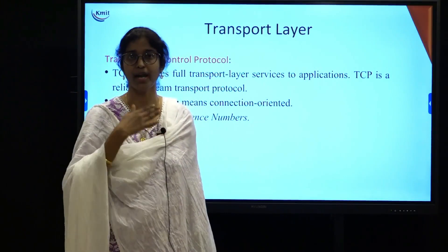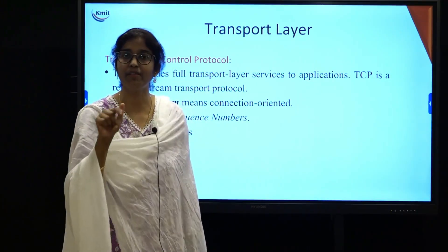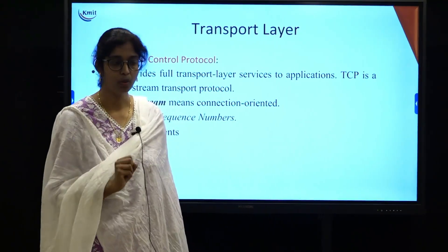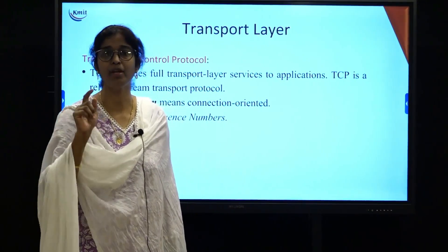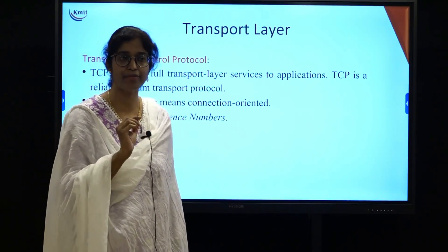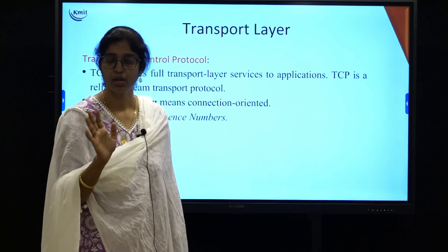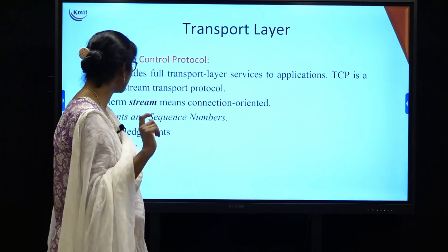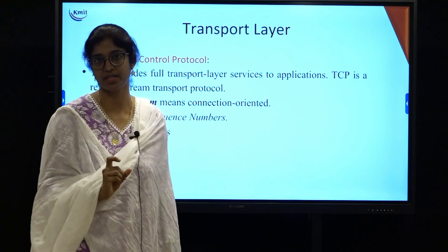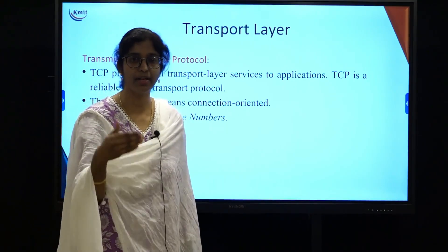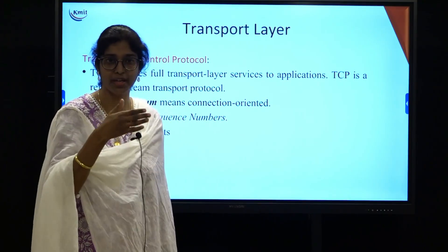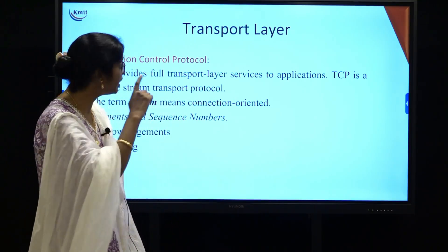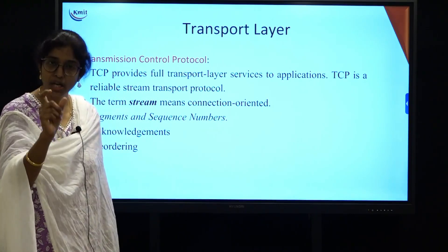A stream of data transmitted from process A to process B is divided into smaller units called segments. Since IP does not provide ordering or reordering — datagrams sent as 1, 2, 3, 4 may arrive as 4, 3, 2, 1 — TCP solves this using sequence numbers. Every segment is assigned a sequence number; when segments arrive at the receiver in any order, the receiver reassembles them in the correct order. The issues of ordering and reordering are solved using segmentation, sequence numbers, and reassembly.